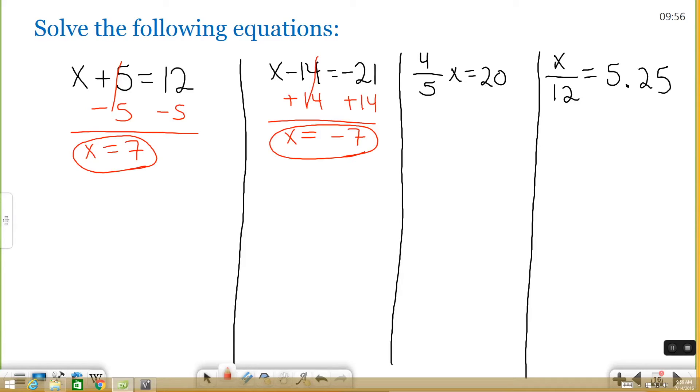4 fifths times x equals 20. So this one can be a little trickier because there's a fraction involved, but the process is still the same. I'm multiplying my variable by 4 fifths, which means to solve it, I need to divide my variable and my other side by 4 fifths. So divide by 4 fifths, divide by 4 fifths.